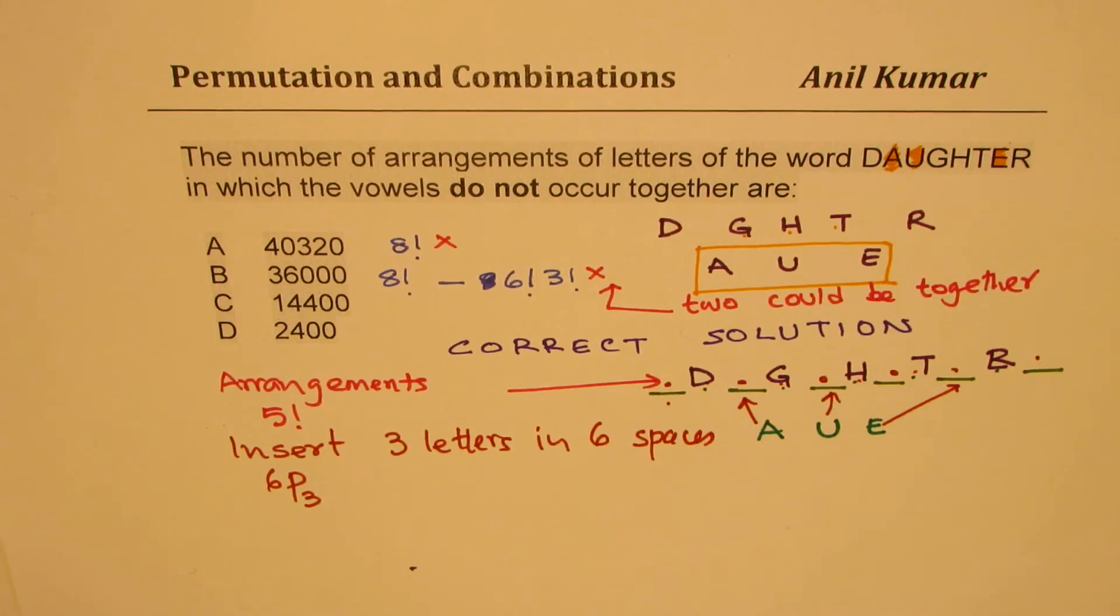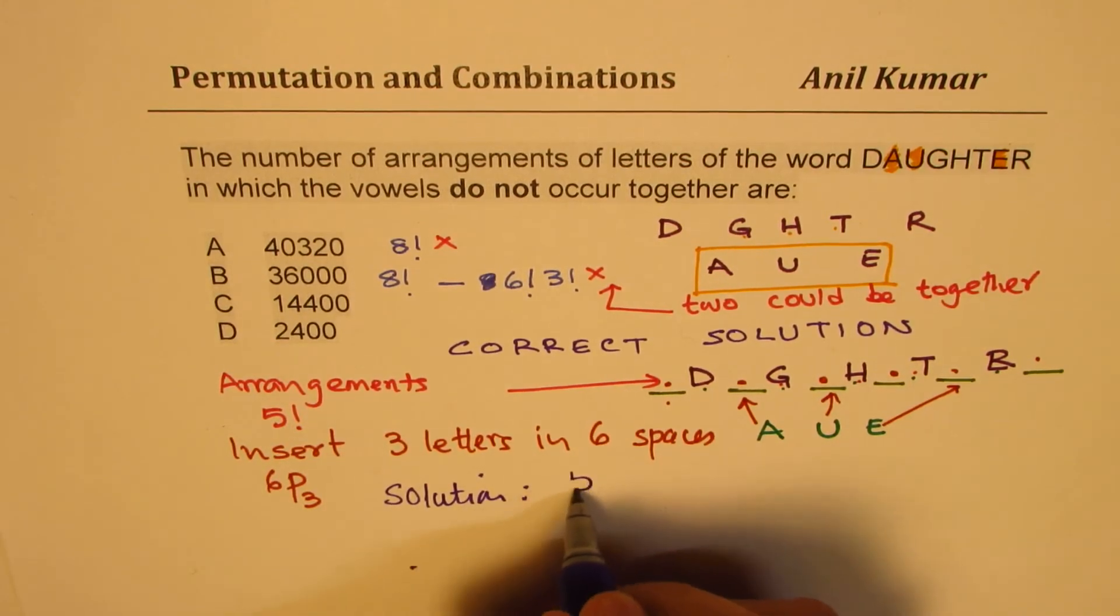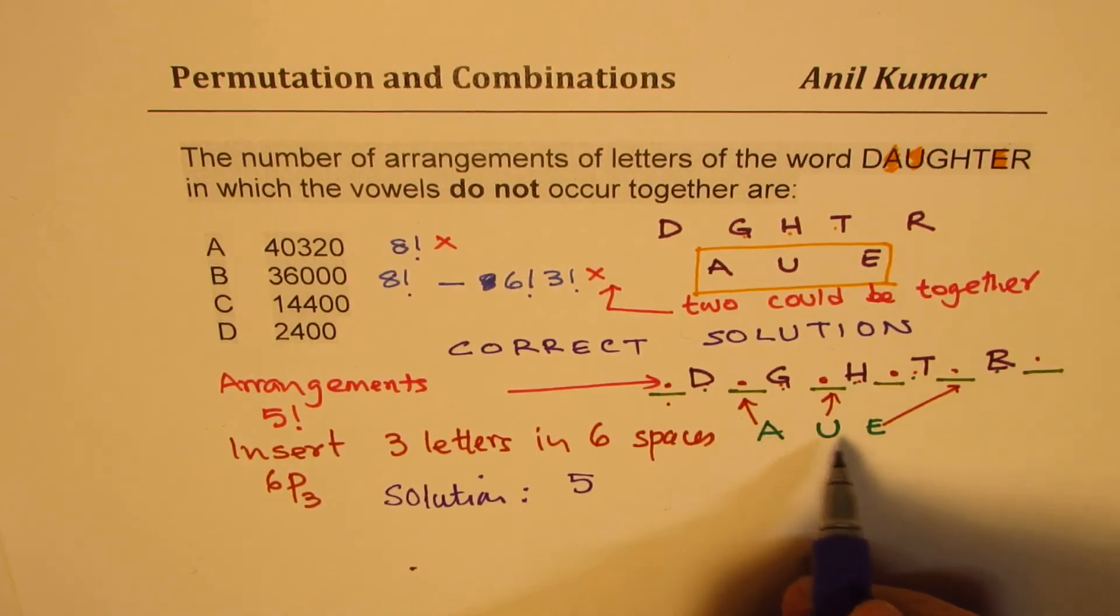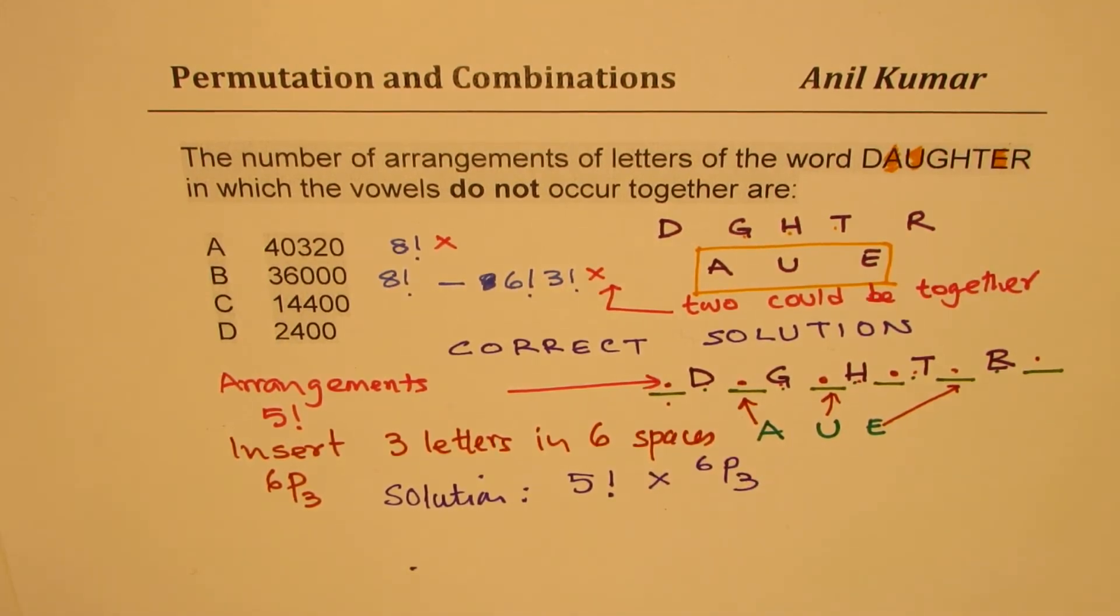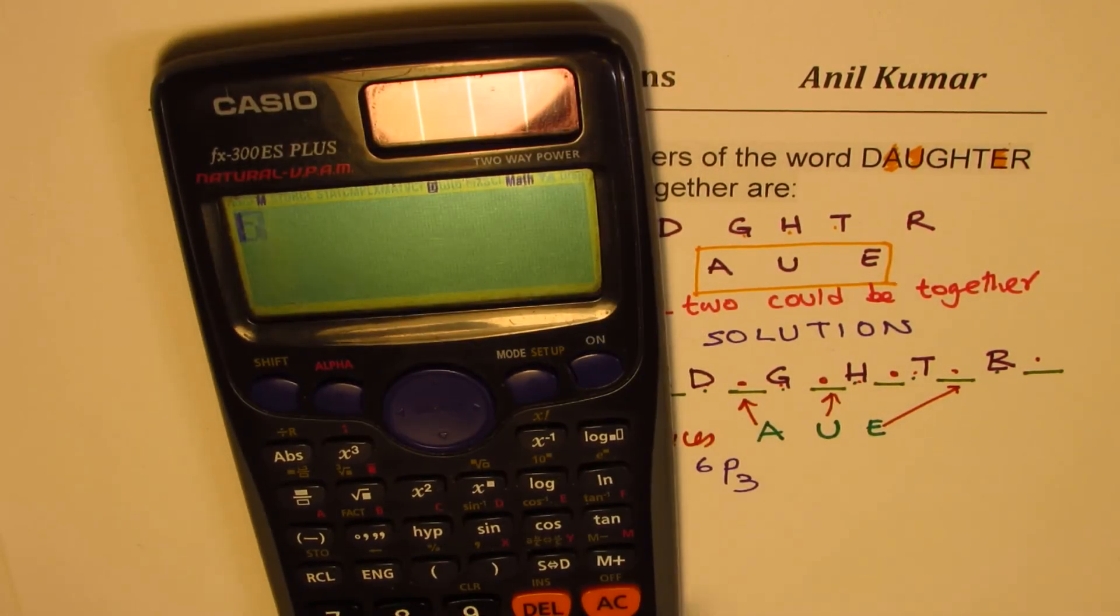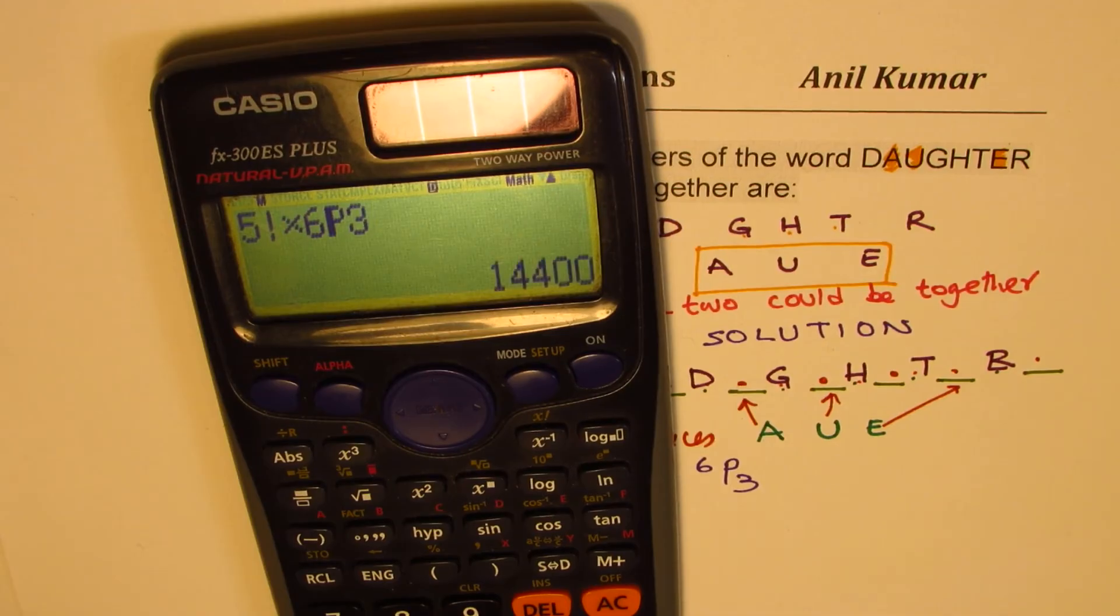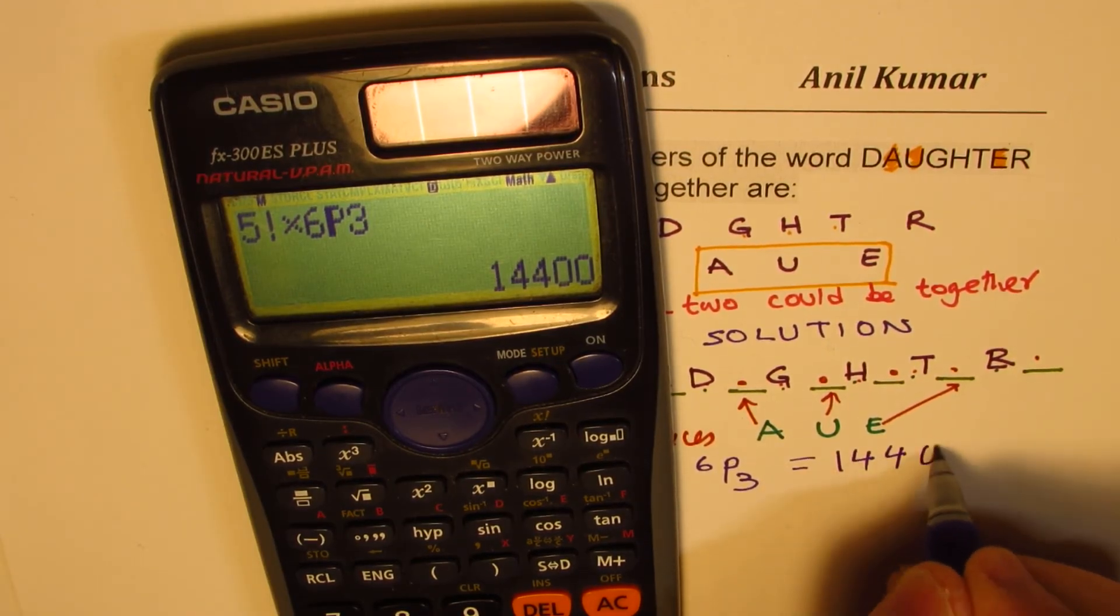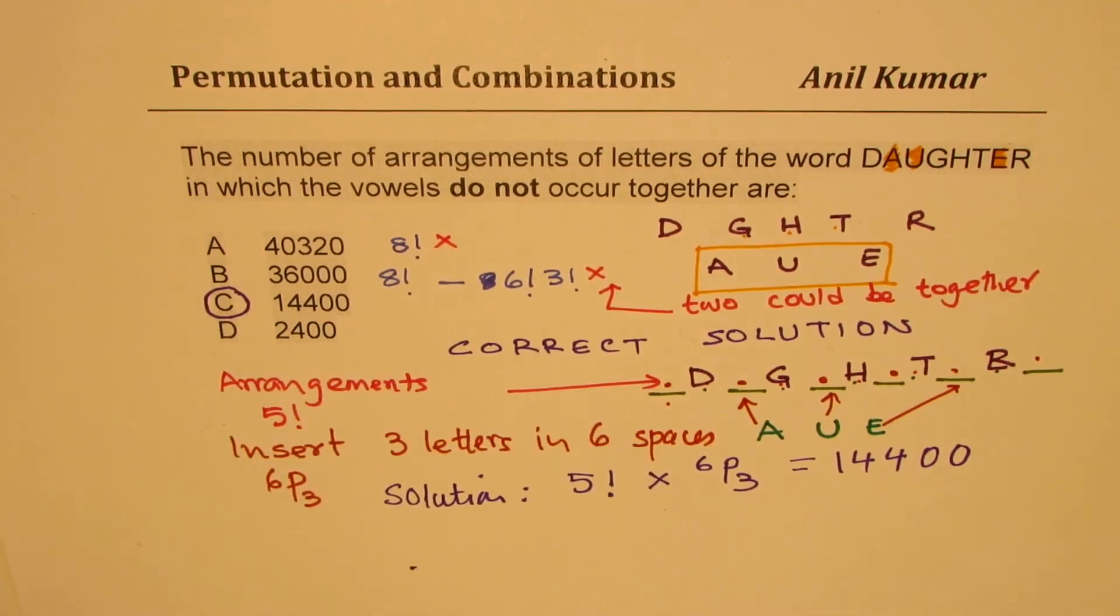Therefore, the correct solution is the product of these two. So in all these arrangements, we could insert A, U, E in the spaces in between. So it is 5 factorial times 6P3. That is the correct solution. So we have 5 factorial times 6P3, and that is equal to 14,400. So these are the total number of ways, which is option C. Now, some of you could actually take 6C3, so you'll get option D, which will again be wrong. So those are the three popular wrong answers for this question.